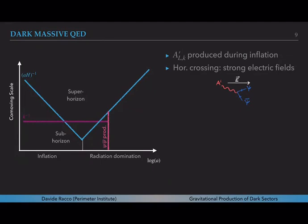When in the Hubble patch we have now these large electric fields, this leads to the creation of pairs of ψ and ψ-bar from the photons that are entering the Hubble radius.